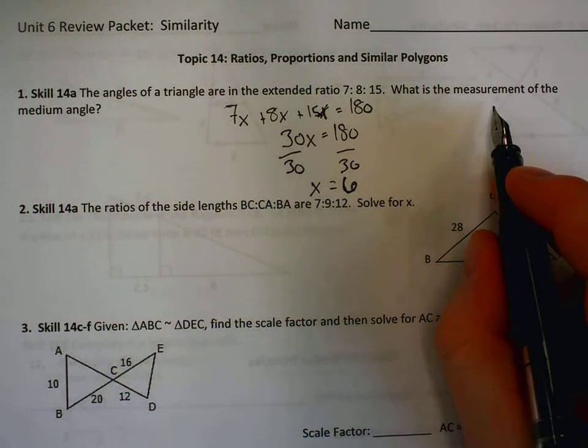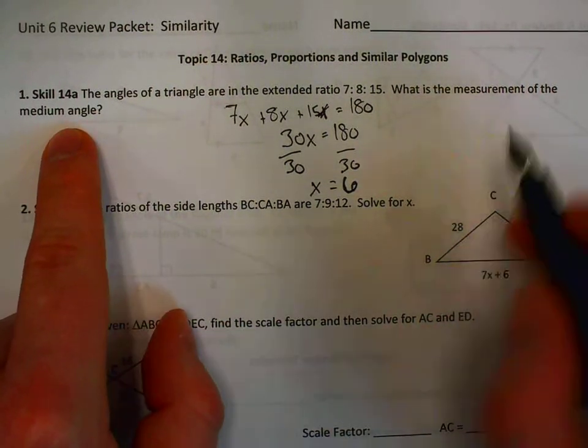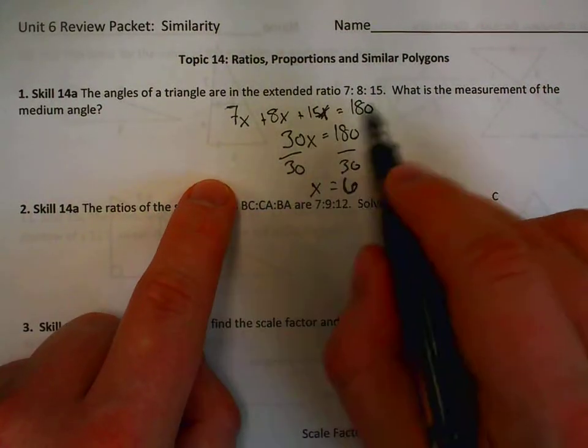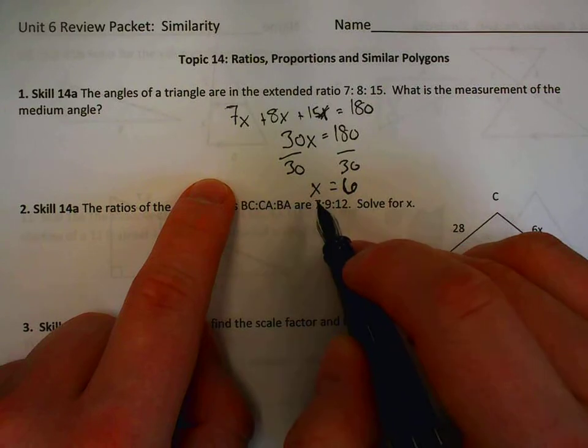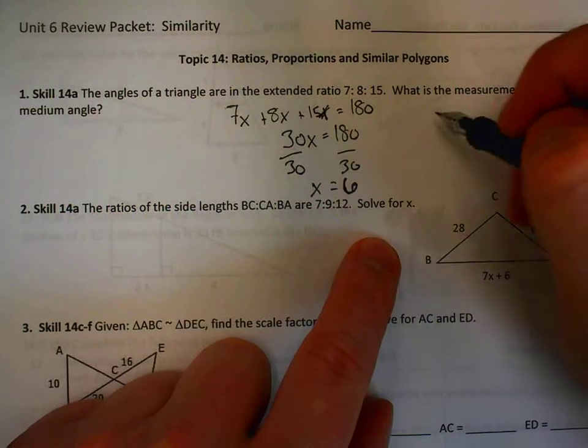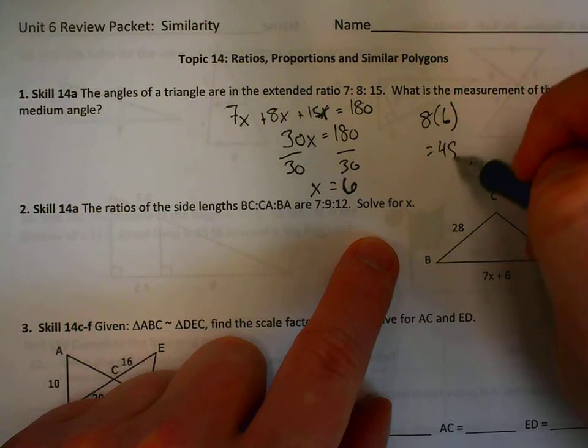The question said, what is the measurement of the medium angle? It's not asking me to solve for x, it's asking me to find the value of an angle. So I have to go back to my original expressions, 7x, 8x, and 15x, and plug in that 6 to the medium value, which would be 8. 8 times 6 would be 48 degrees.